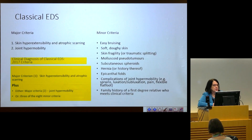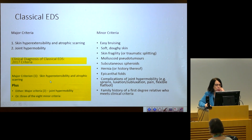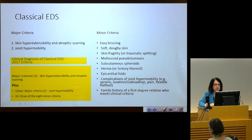For classical EDS, the major criteria are skin hyperextensibility and atrophic scarring, and then joint hypermobility. The clinical diagnosis includes major criterion number one — skin hyperextensibility and atrophic scarring — plus either joint hypermobility as defined by our hypermobility working group, or three of the eight minor criteria on this list.